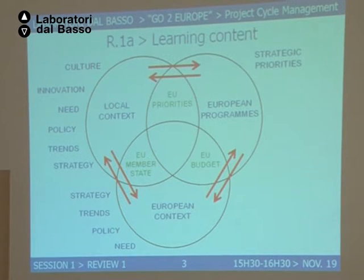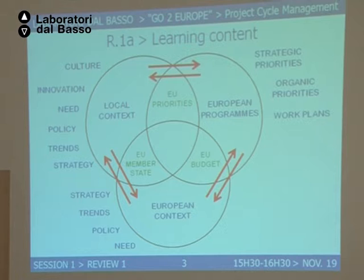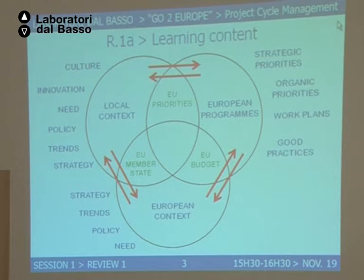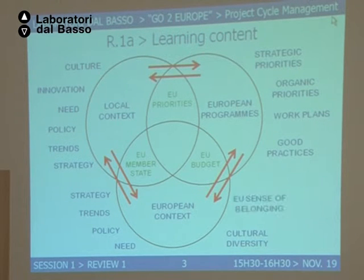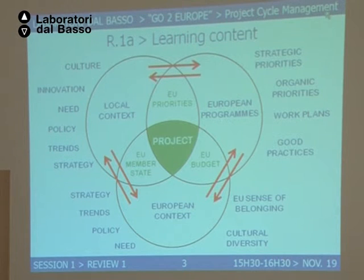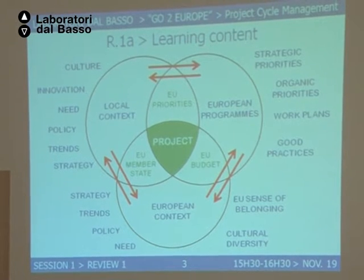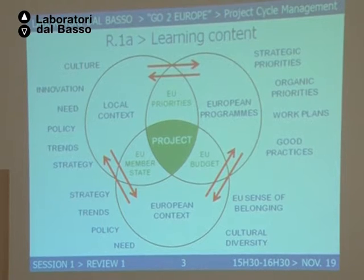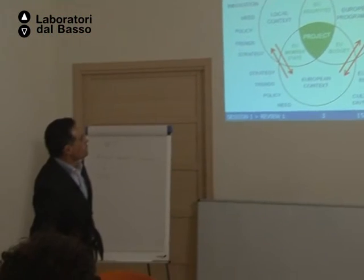At this level, you have the strategic priorities we've been going through today: organic priorities of the programs for the whole period, work plans, the Copenhagen process, the Bruges communiqué. Good practices — cultural diversity to consider, the EU sense of belonging I've been repeating all day. Bingo — you've got your project! That's the way I would summarize what we've been learning today. With all that, you should be able to engage in the process of the program tomorrow.